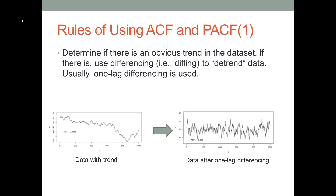Once you get a time series dataset, the first step is to look at if there is an obvious trend inside of this dataset. If there is, then this dataset violates the stationary data assumption. We have to use differencing to detrend this dataset — in other words, to take out the trend from this dataset. Usually, we will use one-lag differencing to detrend a time series dataset. If you forget what the stationary data assumption and differencing are, I listed the lecture video in this video's description section.